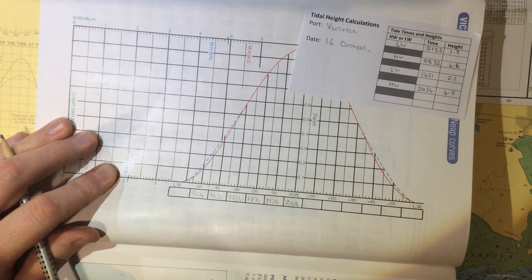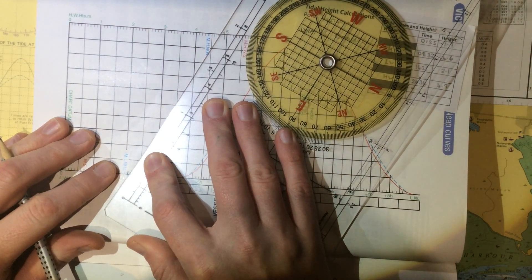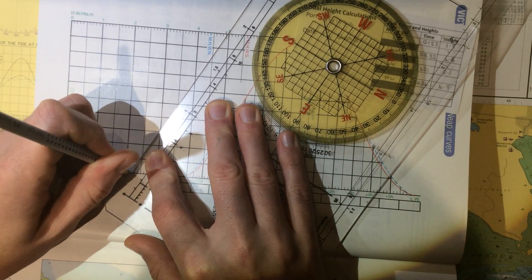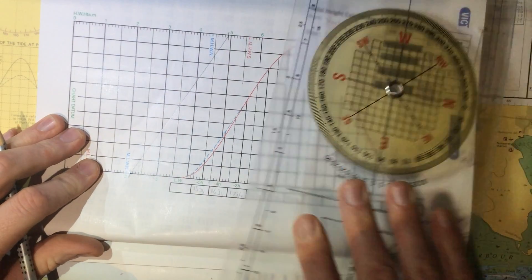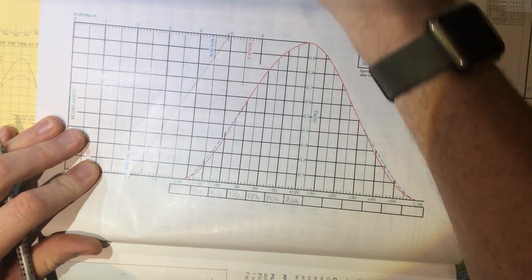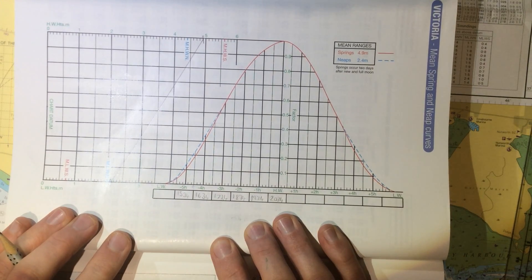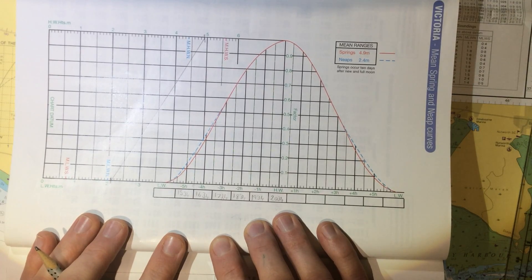With a ruler, and we can use the straight edge of the plotter, we join these two points up with a straight line. This is now our curve set up for this particular day and on this particular tide. So this is for the late afternoon on the 16th of October.